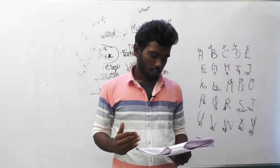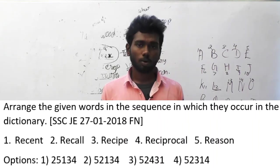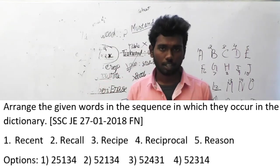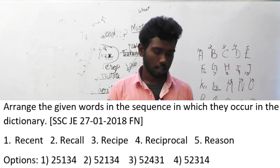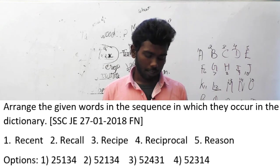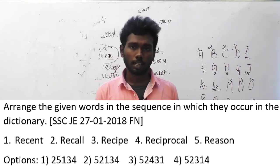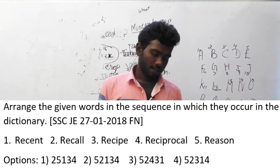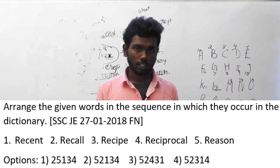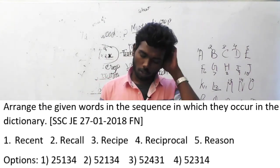Question number 146. Arrange the given words in the sequence in which they occur in the dictionary. This is the same dictionary ordering type we have solved before. The options are: recent, recall, reciprocal, and recent again. If you order them according to dictionary sequence, option B is the answer: 5, 2, 1, 3, 4. This question is asked in SSC JE, 27th January 2018, forenoon session.